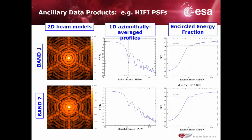For instance, the beam models are provided for each of the 14 Hi-Fi mixers. Here is a representation of the Hi-Fi beam patterns based on observation of MARS. The left panels illustrate the two beam patterns for two extreme frequency spots of the Hi-Fi range, that is, band 1 and 7. The middle panels show the azimuthal average of the 2D beam patterns, offering a 1D beam profile. And the right panels show the encircled energy fraction encompassed by the beam as a function of the radial distance from the beam center.